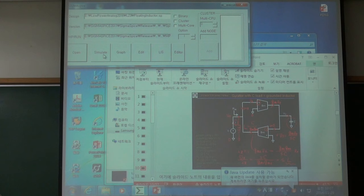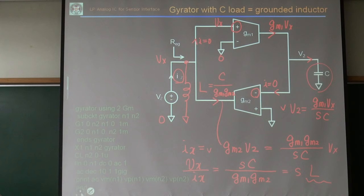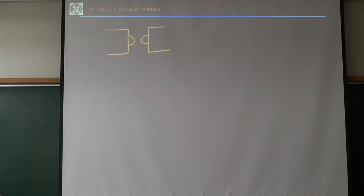Let's talk about the floating inductor first. This is a grounded inductor — one node is connected to ground. A floating inductor uses a gyrator; this is the gyrator notation.